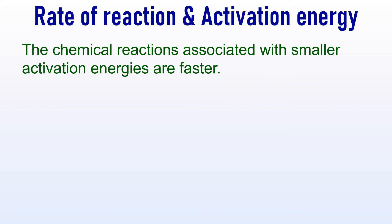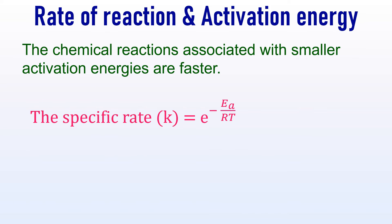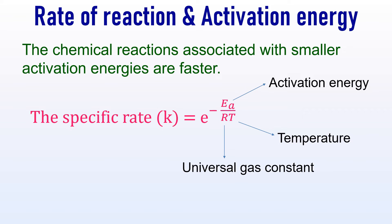Now, let us see the relation between activation energy and the rate of a chemical reaction. The chemical reactions associated with smaller activation energies are faster. The specific rate of a chemical reaction is given by E to the power of minus Ea divided by RT, where Ea is activation energy, T is temperature, and R is the universal gas constant.